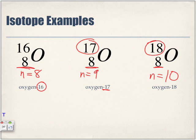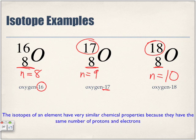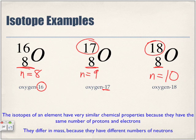Now the isotopes of an element have very similar chemical properties because they have the same number of protons and electrons. That doesn't change. Protons, electrons, doesn't change. The only thing that's changed is the number of neutrons because we've increased the atomic mass. And they differ in mass because they have the different number of neutrons. So that's the only thing that has changed.